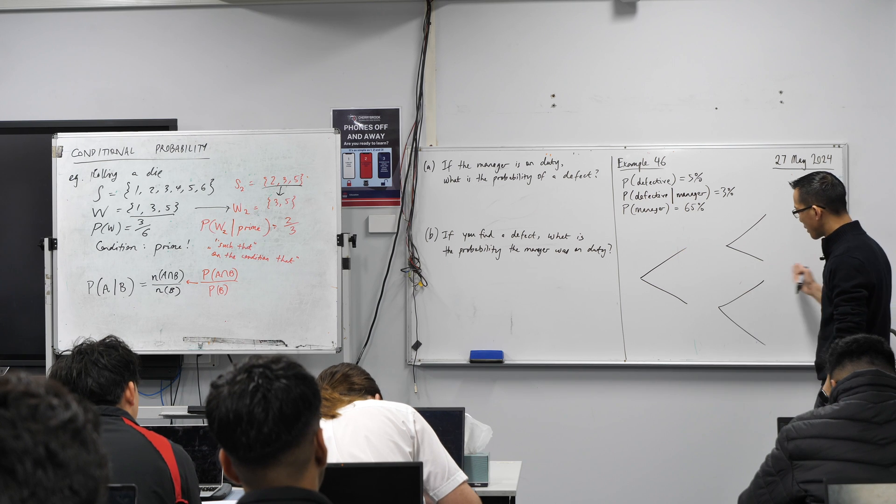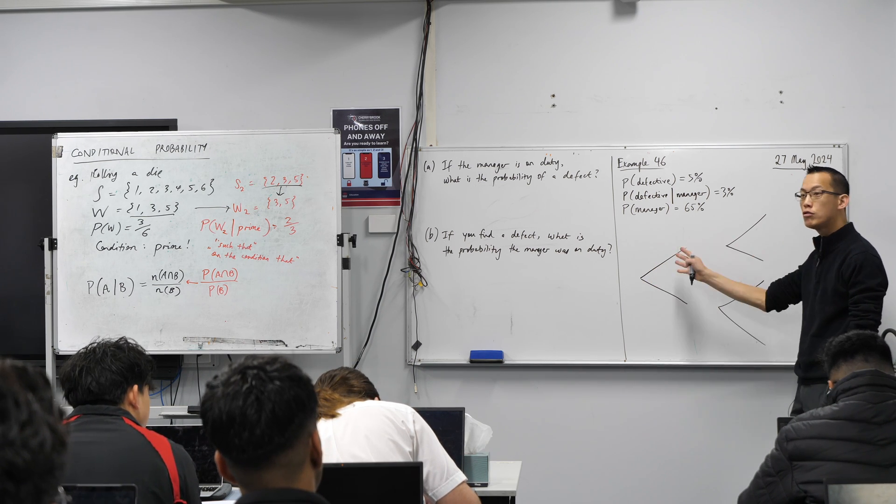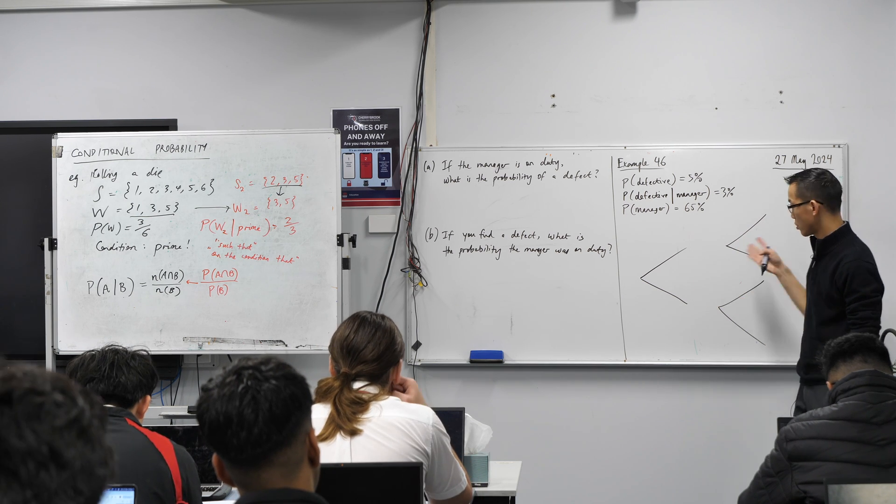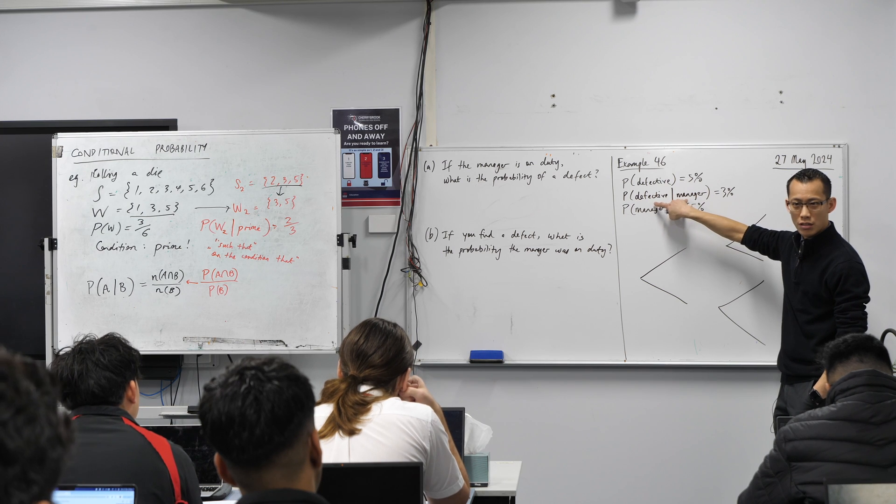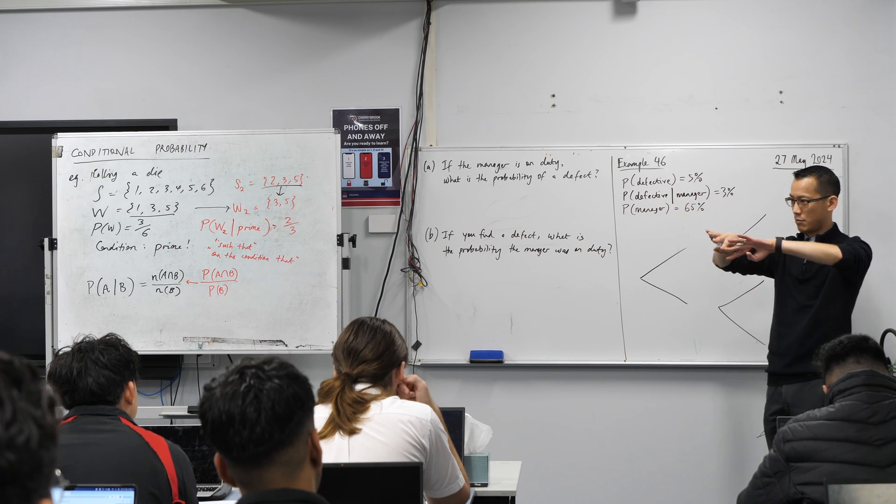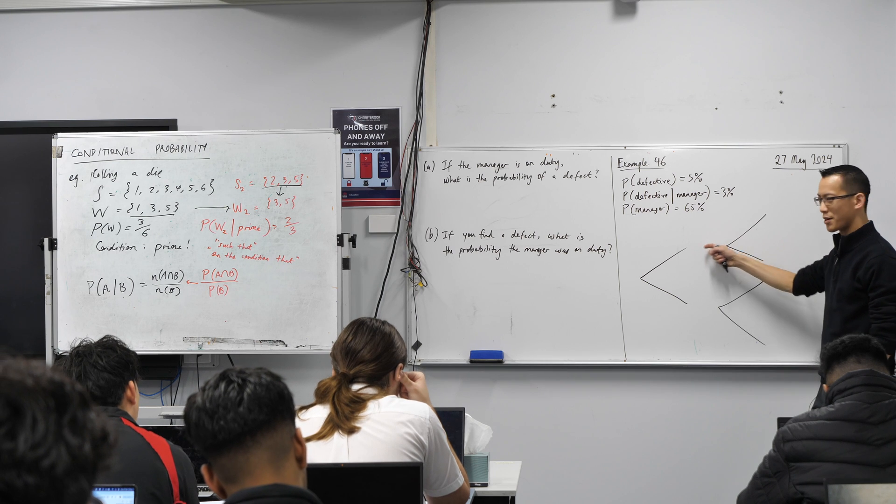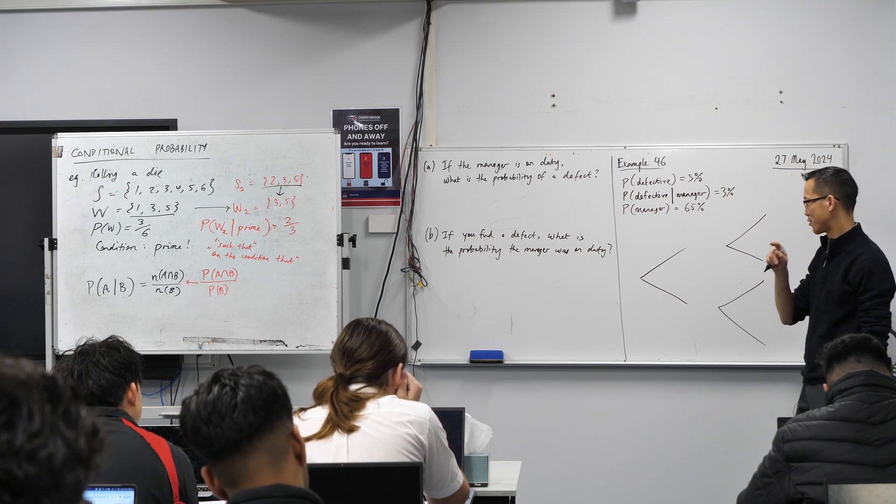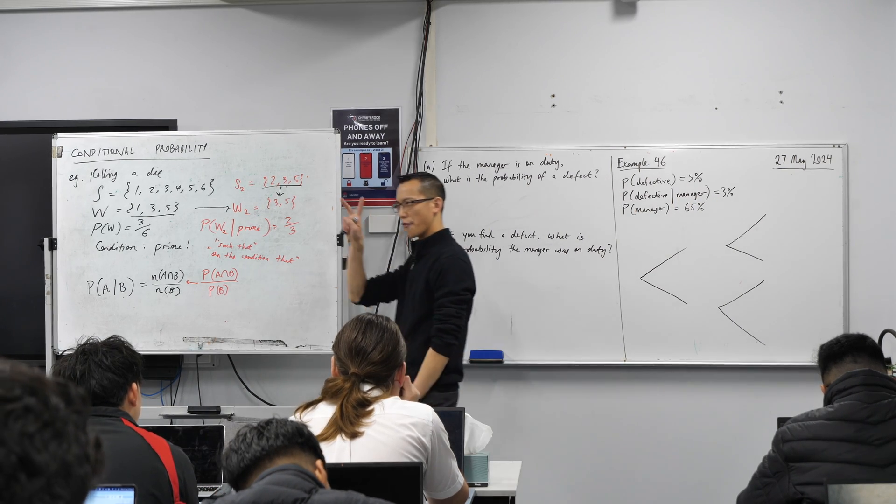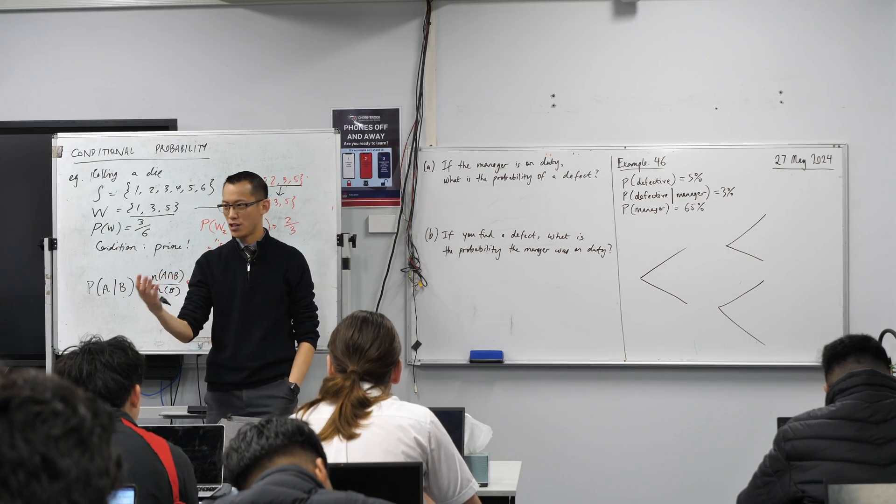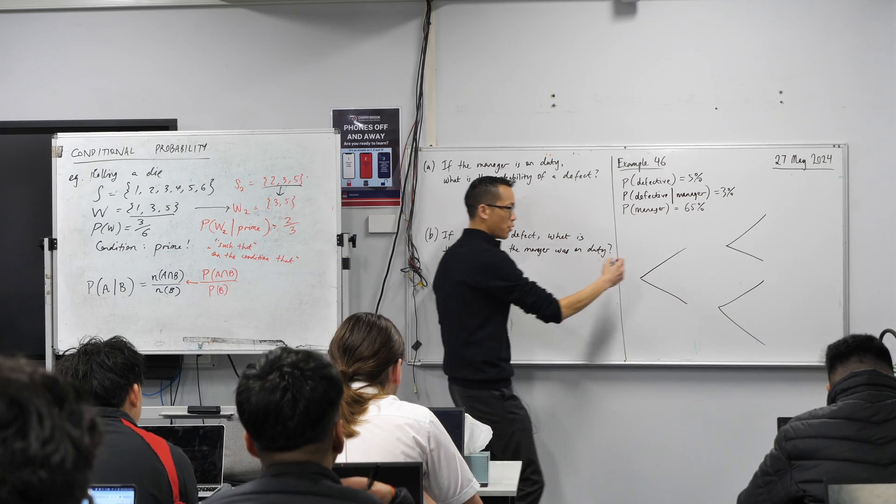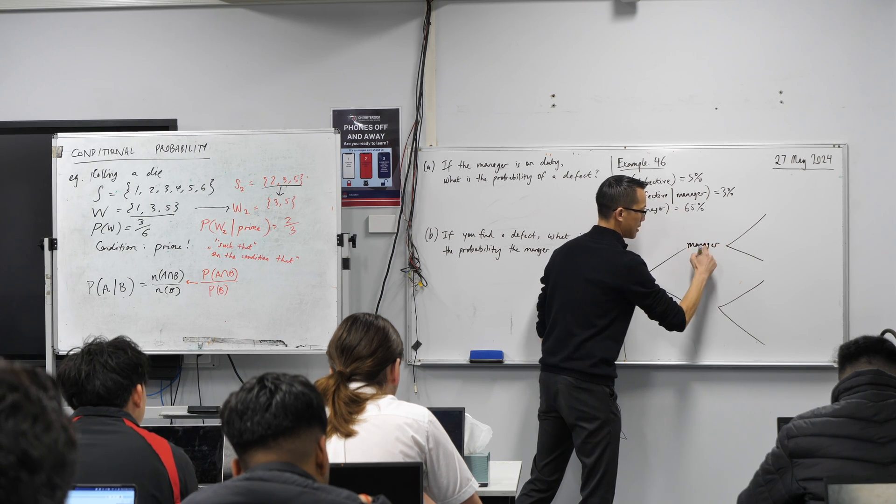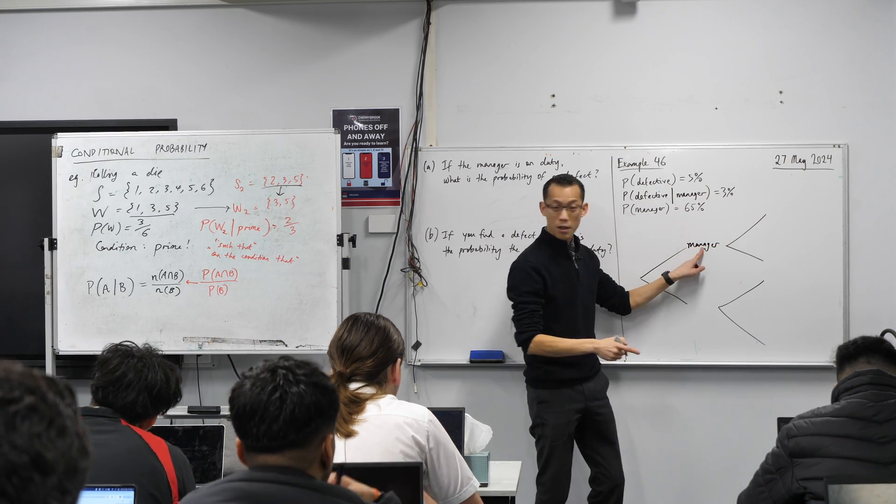So I've got here a tree diagram that represents the two stages that I'm thinking about. Now, the way that I knew to draw two stages was I can think of two different things that are happening and I can sort of separate them out. Now, whether you think about one as the first, one as the second, this is the part where it starts to get a bit trickier. Which makes more sense to be the first thing? I want to put manager as first.